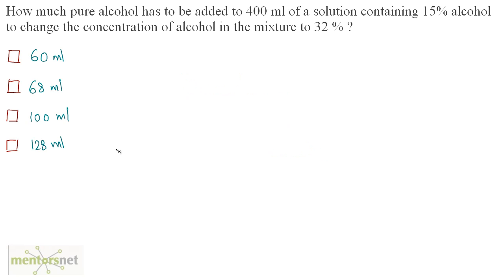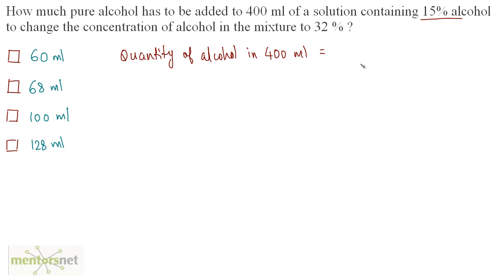How much pure alcohol has to be added to 400 ml of a solution containing 15% alcohol to change the concentration of alcohol in the mixture to 32%? It is given that this 400 ml of solution contains 15% alcohol. The quantity of alcohol in this solution is equal to 15% of the solution: 15/100 times 400 = 60. So, 60 ml of alcohol is there in 400 ml of this solution.